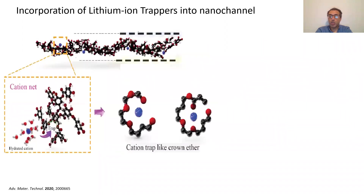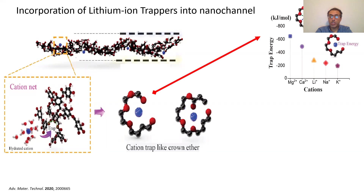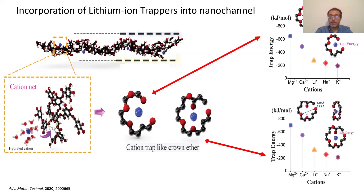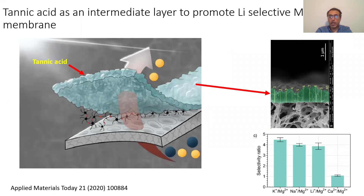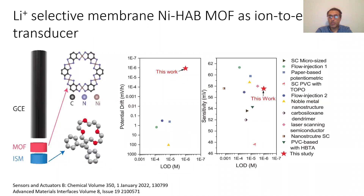The tannic acid molecules have specific features similar to lithium-ion ionophores and crown ethers. The trapping energy of lithium is lower than that of magnesium and calcium but higher than that of sodium and potassium. In another interesting work, we used tannic acid as an intermediate layer to promote the nucleation and growth of lithium-selective MOF membranes — a unique approach as we developed a way to create MOF thin-film membranes on a flexible polymeric substrate, making the technology scalable. We also used similar principles to develop a lithium-ion sensor using lithium-selective membranes, which showed very good performance.